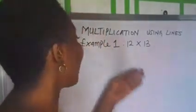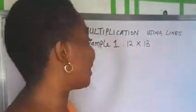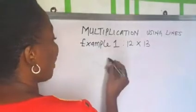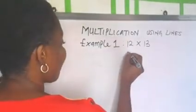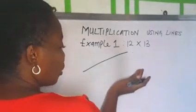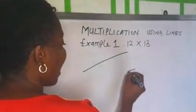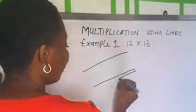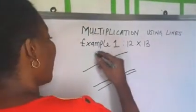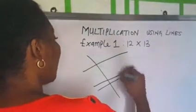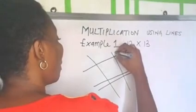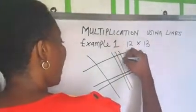Example number 1, if you are asked to multiply 12 by 13, that is 12 times 13, you simply draw lines. We have one, so I am going to draw one line here, and this is two. I am going to leave some gap and draw two lines. Then, we come to the opposite direction. I am going to draw one line here because this is one, and I will draw three lines here. One, two, and three.